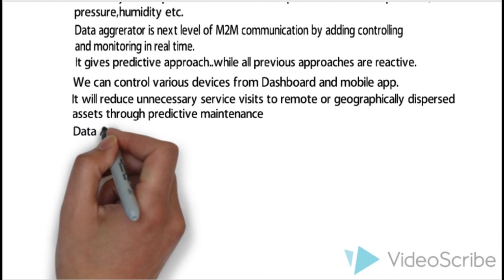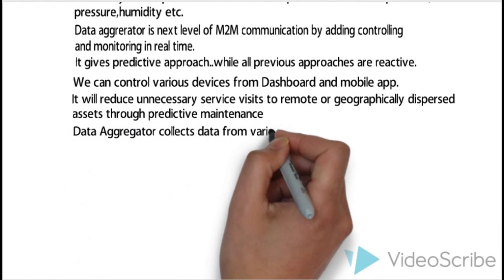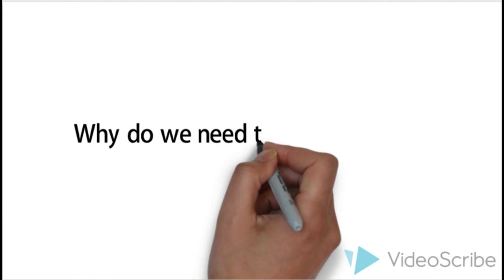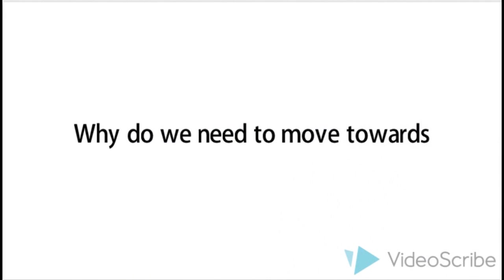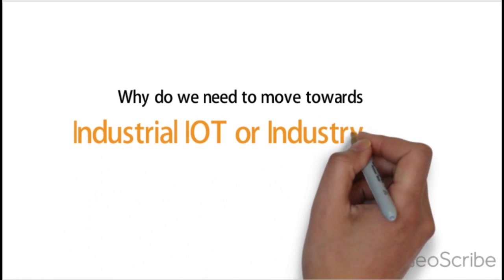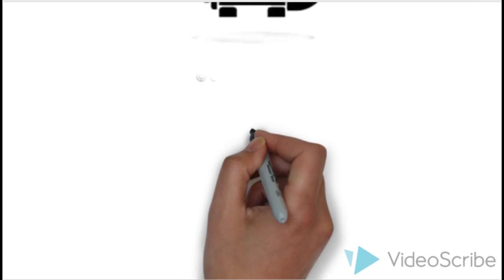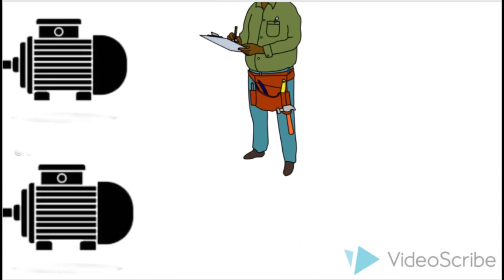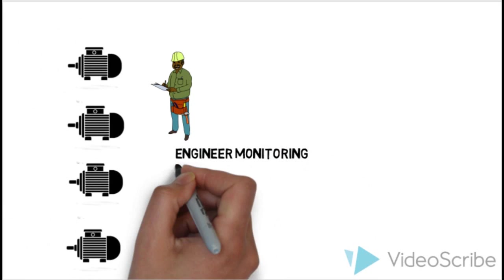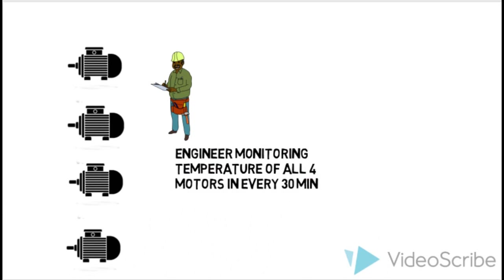So Data Aggregator accepts data from various sensors and sends it to server. Now, why do we need to switch towards Industrial IoT or Industry 4.0? Let's say we have a scenario in which we need to monitor temperature of multiple motors at a regular interval and maintain log as well.